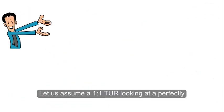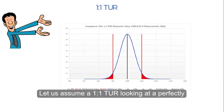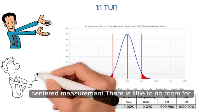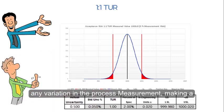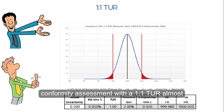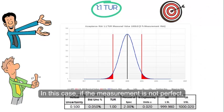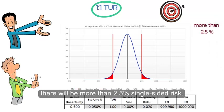Assuming a one-to-one TUR with a perfectly centered measurement, there is little to no room for any variation in the process measurement. Making a conformity assessment with a one-to-one TUR almost always requires the measured value to have no bias. If the measurement is not perfect, there will be more than 2.5 percent single-sided risk.